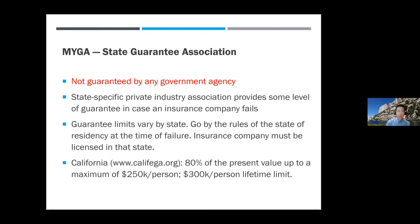In general, I don't see the guarantee association as much of a guarantee. Terms are better in other states, but you're better off treating it as a surprise if the company fails and you get some protection. When you go into it, treat that guarantee as non-existent and really think: do I want to do this? Is the insurance company sound? Am I okay giving this insurance company my money for five years?